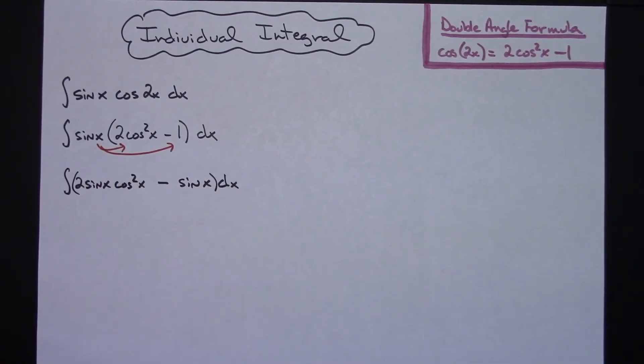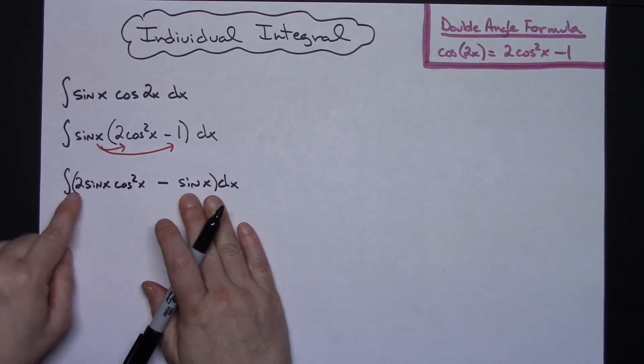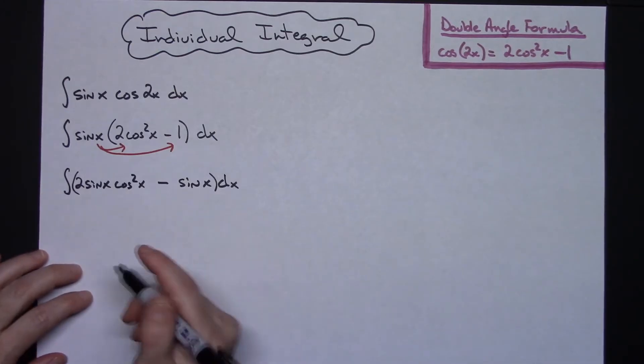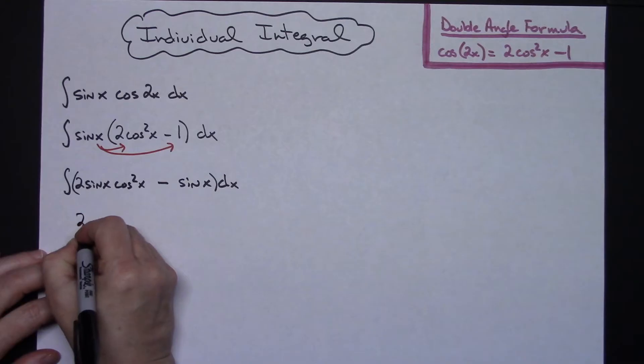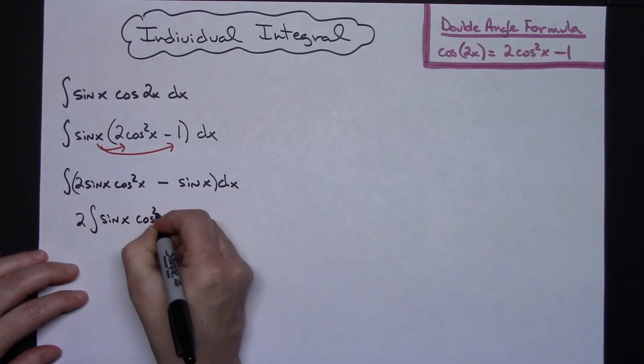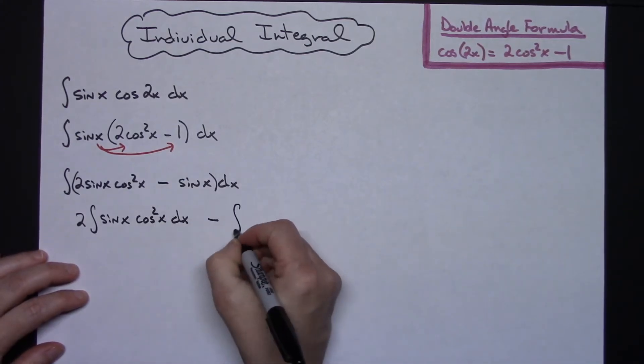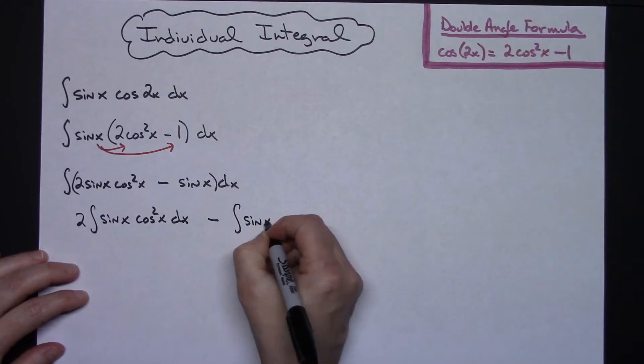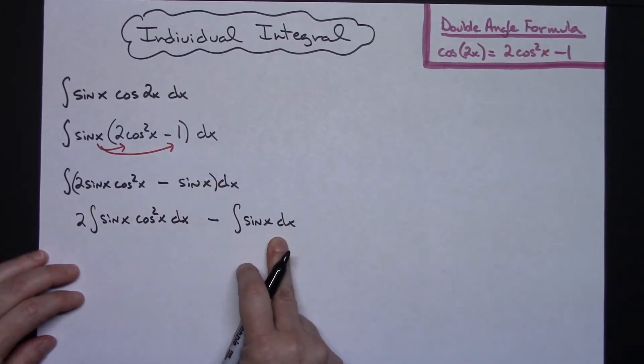Now from here I'm going to split this up into two individual integrals. When I do that on the one on the left I'm going to pull that 2 out in front. So I'll have 2 integral sine x cosine squared x dx and then minus the integral of sine x dx. Just taking that integral and writing them as two separate integrals.